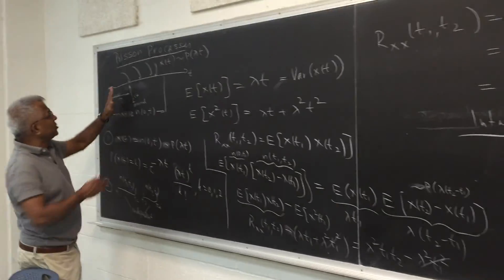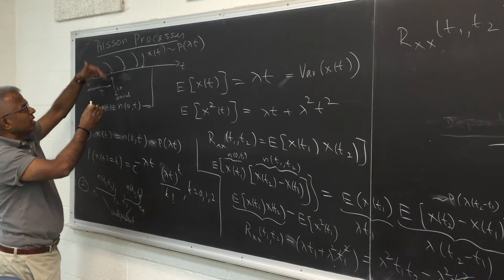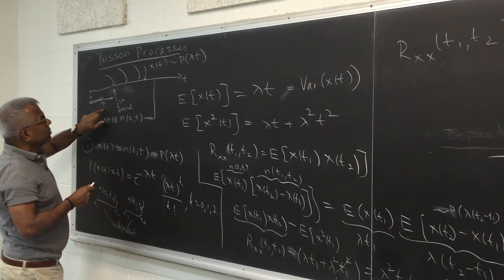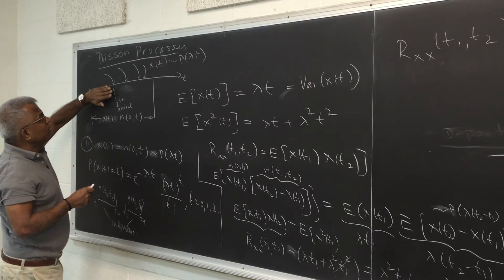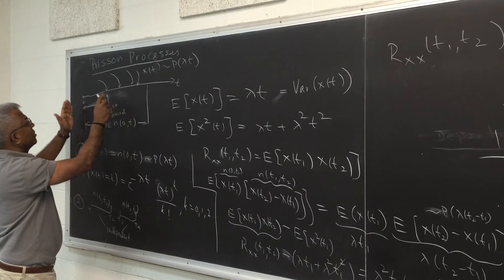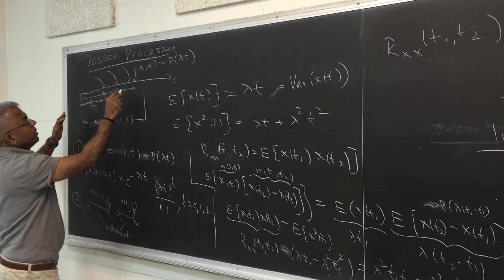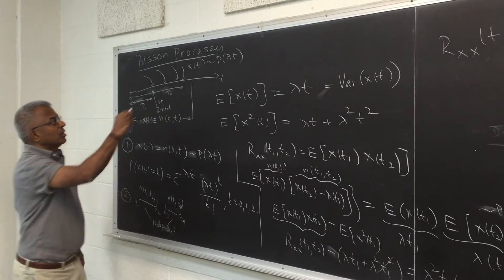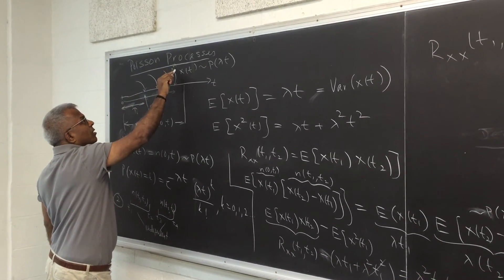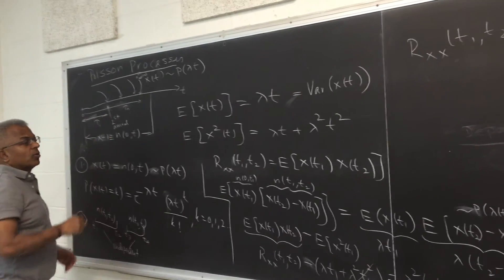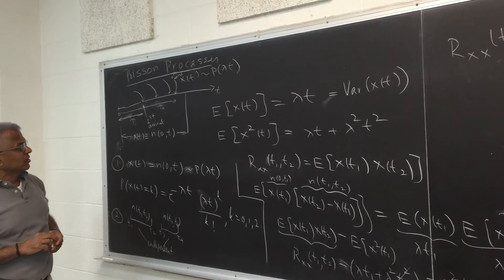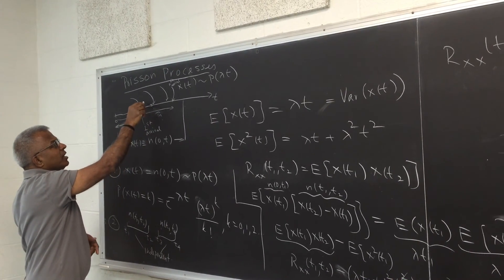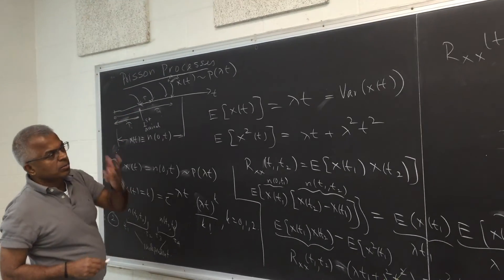Next we can look at the distribution of these random variables. Remember the arrivals are random. So the first arrival is a random variable, the second arrival is a random variable, and τ_n corresponds to the nth arrival. We can try to find their density functions, and also look at the density function of any inter-arrival time τ.